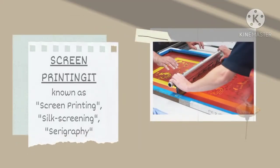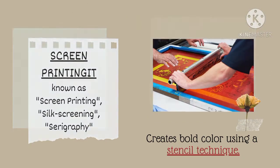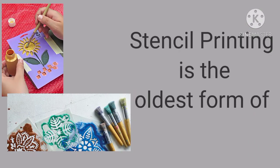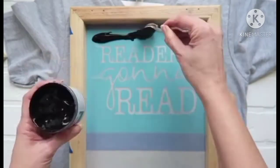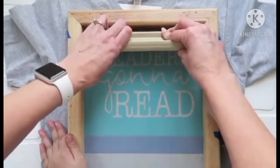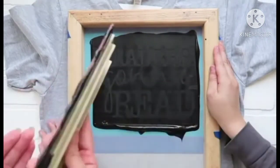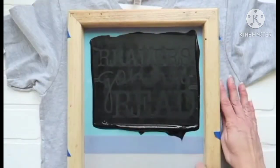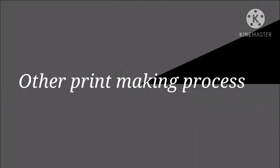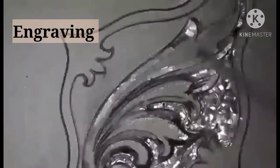Screen printing, also known as silk screening or serigraphy, creates bold color using a stencil technique. Stencil printing is one of the oldest forms of graphic arts and uses a woven mesh to support an ink-blocking stencil. A squeegee is used to spread the ink across the screen over the stencil and through the open mesh onto the paper or material, printing only the open areas of the stencil.